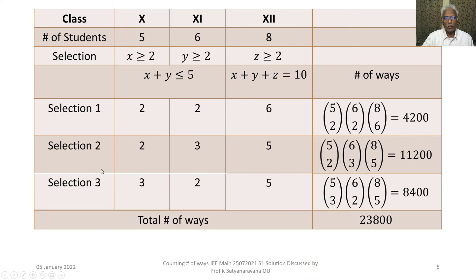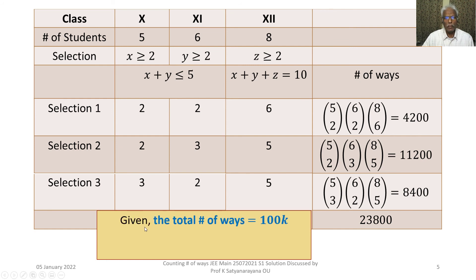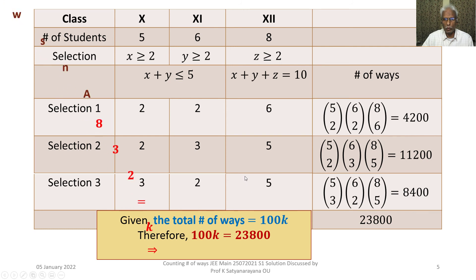Thus, the total number of ways is 4200 + 11200 + 8400 = 23800. Since the total number of ways is given as 100k, we have 100k = 23800. Therefore, k = 238. That is our answer.